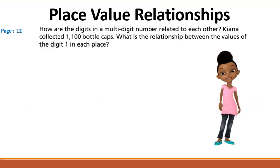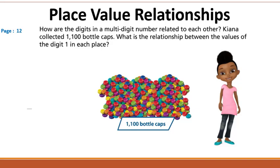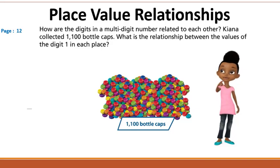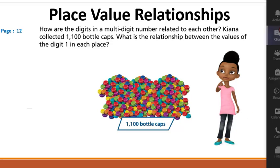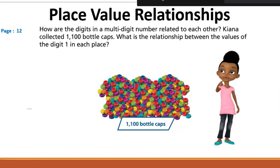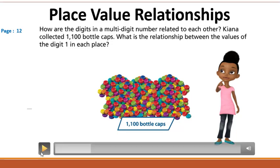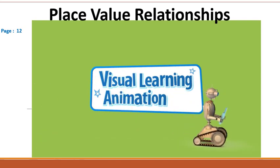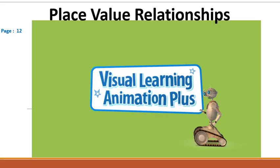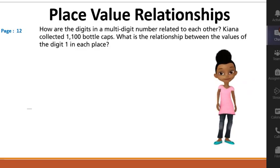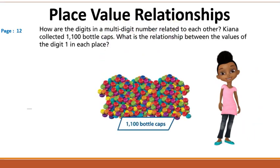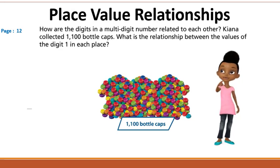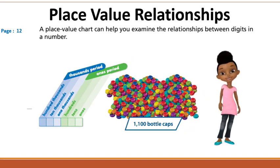How are the digits in a multi-digit number related to each other? Kiana collected 1,100 bottle caps. What is the relationship between the values of the digit one in each place? A place value chart can help you examine the relationships between digits in a number.